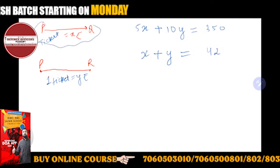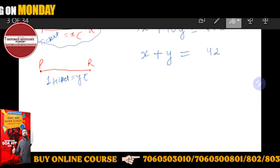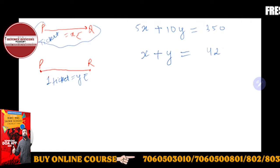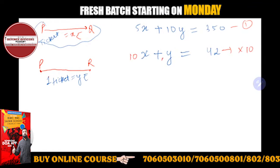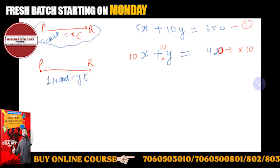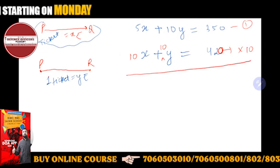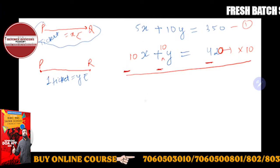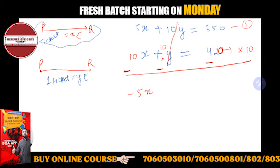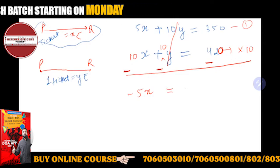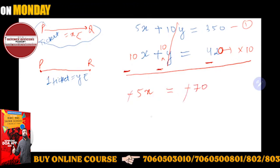These are two equations. Multiply equation number two by 10: this will be 10X, this will be 10Y, this will be 420. Now solve it. 5X minus 10X will give you minus 5X, the 10Y will get cancelled. 350 minus 420 will give you minus 70.